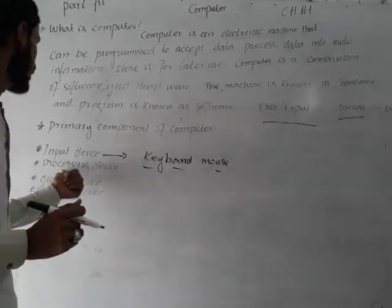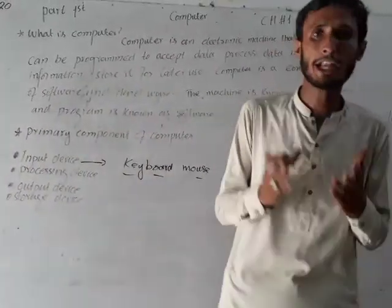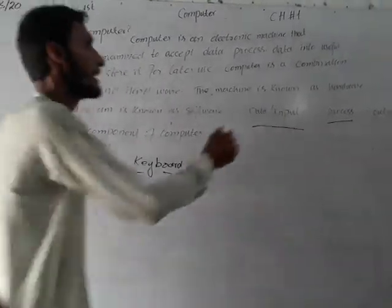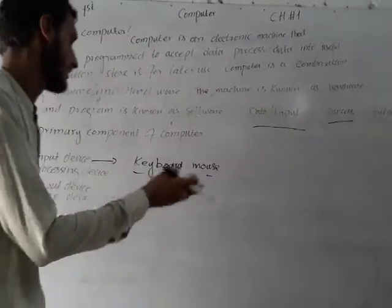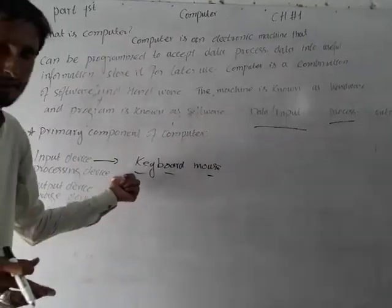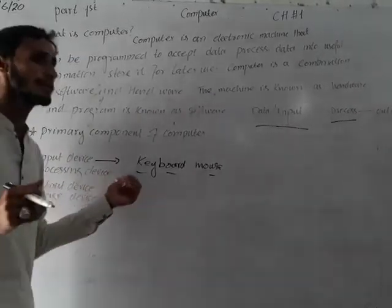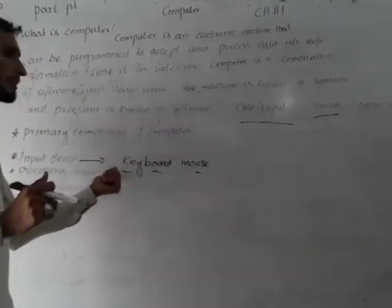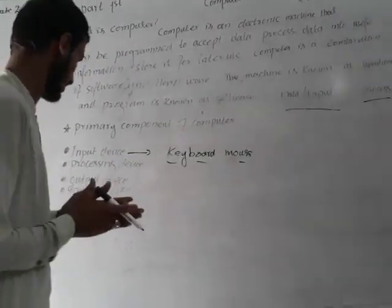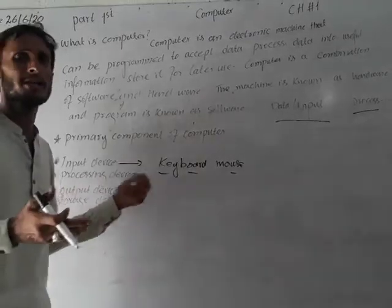The processing device is used to process the data. It is also known as the Central Processing Unit, or CPU. We can also call it the Processor. Every computer must have one Central Processing Unit.